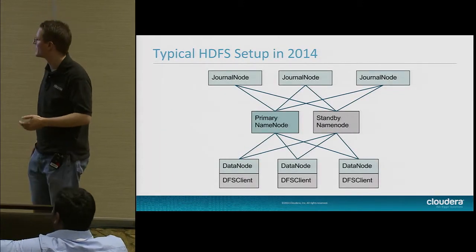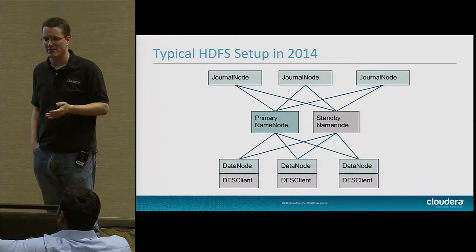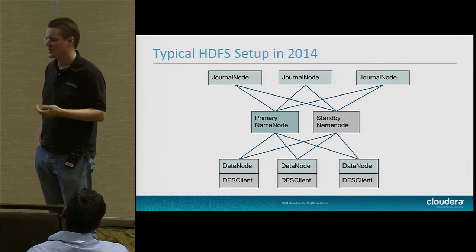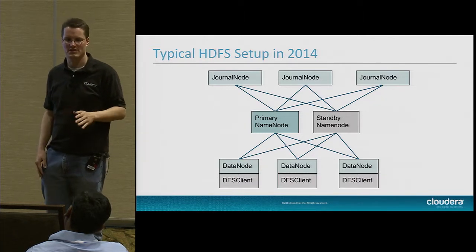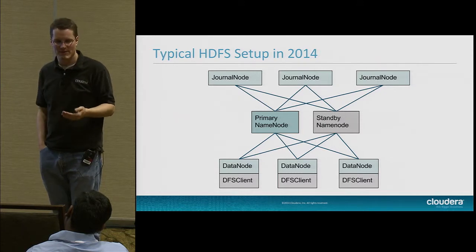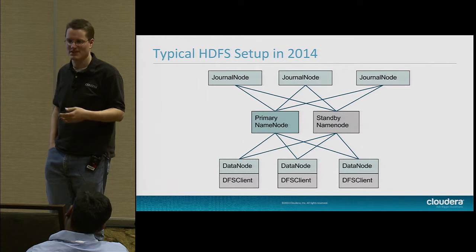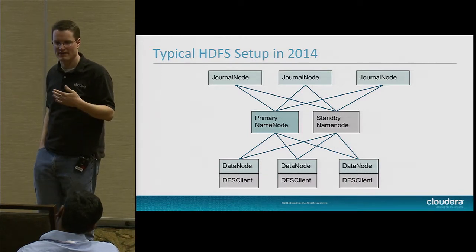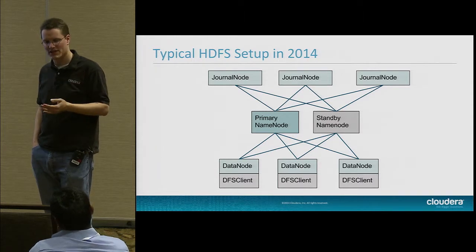This is a typical HDFS setup in 2014. I highlight the high-availability stuff because it's important for production deployment. The idea that the name node is a single point of failure is many years out of date. In this cluster we have a primary name node and a standby name node ready to take over if the primary fails. Journal nodes store the edits and a lot of the metadata.